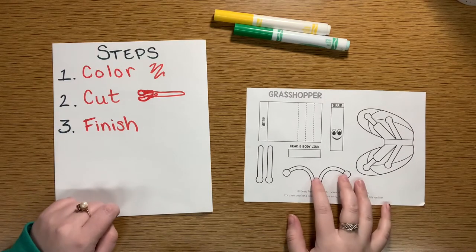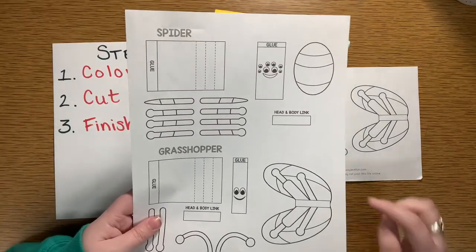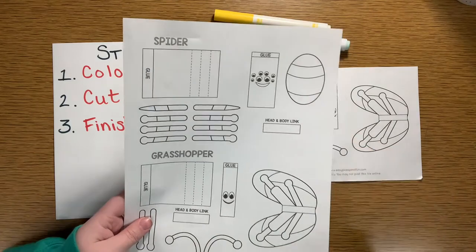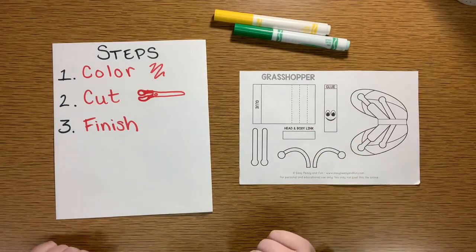I'm going to use this half sheet. It was originally part of a full template, but I've already cut off the spider and used it for another puppet. So all I have left right now is my grasshopper part. I'm going to go ahead and color it.